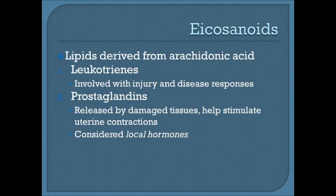Eicosanoids are a type of lipid derived from arachidonic acid, which is one of our essential fatty acids — meaning it must come from your diet; you cannot synthesize it yourself. It's considered an omega-6 fatty acid. Good sources include chicken, eggs, lamb, and beef. For vegetarians or vegans, vegetable or seed-based oils are also good sources.